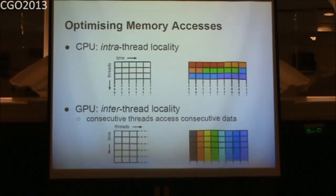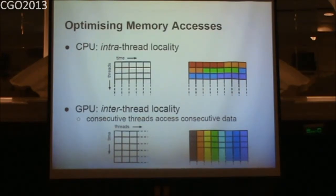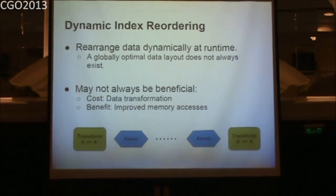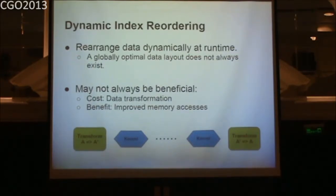To achieve inter-thread locality on the GPU, you have to do data transformations. For example, if you have a multi-dimensional array indexed by i, j, and k, you can change the array layout so the index becomes k, j, i — reversing the access order. Often you can find a layout that is optimal for your program so that in every loop you achieve inter-thread locality, but sometimes that's not possible. In that case, we consider dynamic index reordering.